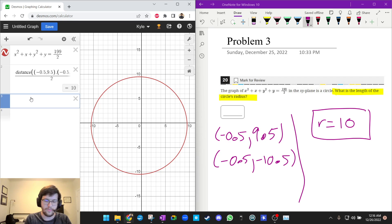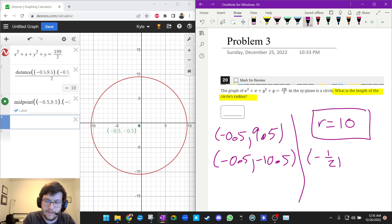And let's say I wanted to find the center. So of course, we could do the midpoint of negative 0.5 comma 9.5 and negative 0.5 comma negative 10.5. And I get negative 0.5, negative 0.5. Or in other words, negative 1.5, negative 1.5. And that is the center.